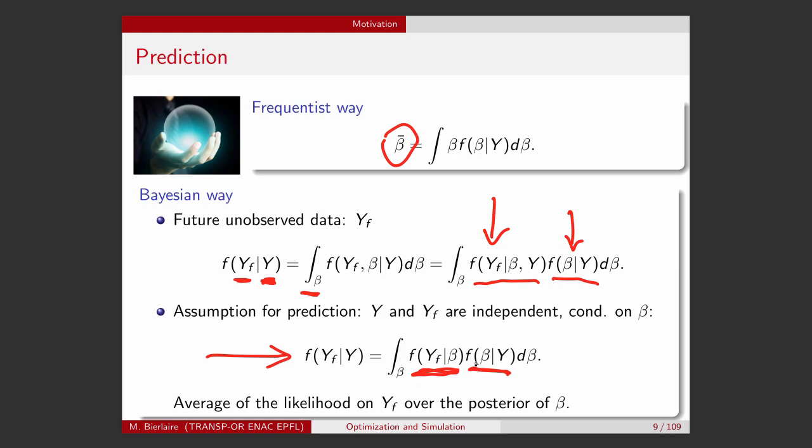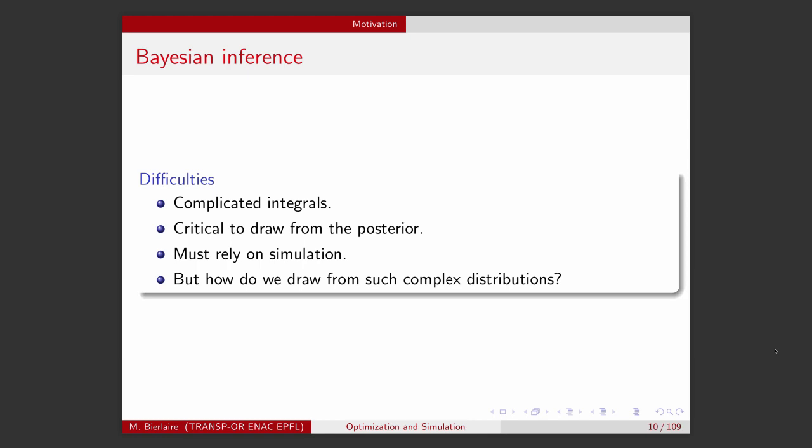So we know how to calculate the likelihood. We know how to calculate the posterior. So we can actually draw from this distribution. But again, the distribution is very complicated. So we will have to rely on MCMC methods in order to be able to do prediction. So in summary, when you do Bayesian inference, it involves complicated integrals. And these integrals are critical to draw from the posterior. Therefore, we must rely on simulation. We cannot calculate this analytically. But the question is, how do we draw from these complex distributions? And this is really the objective of Markov chain Monte Carlo methods.